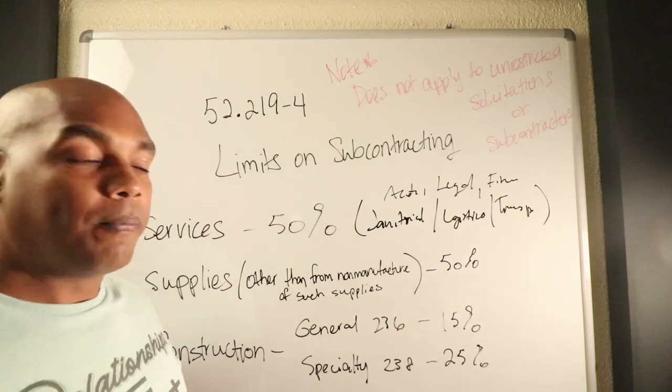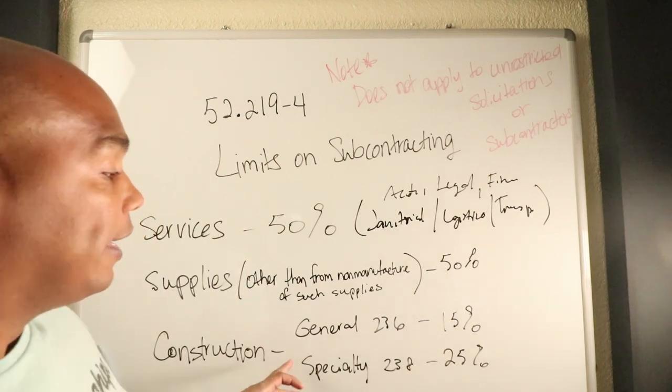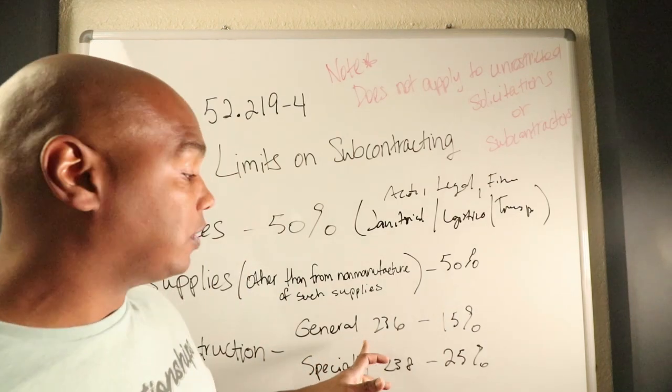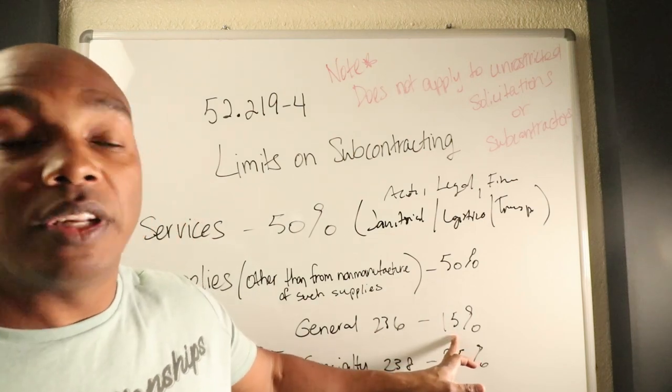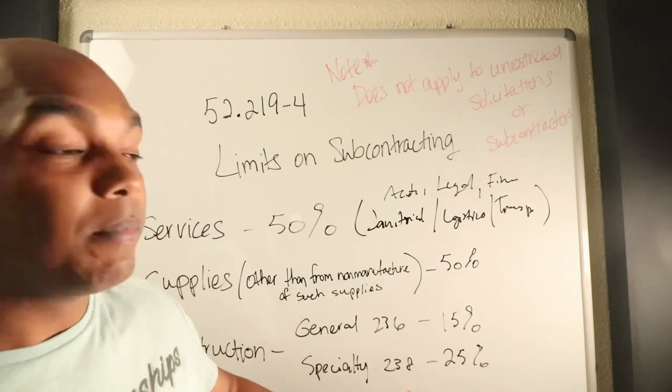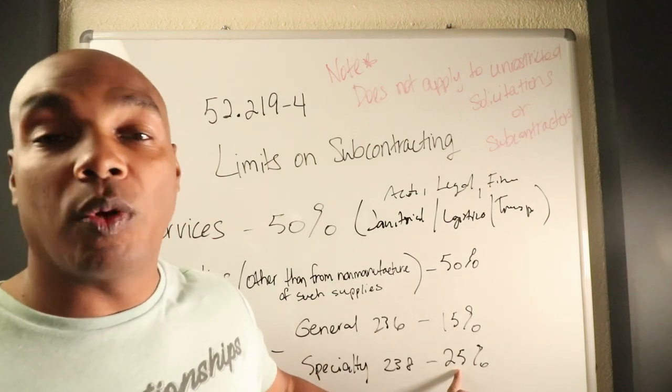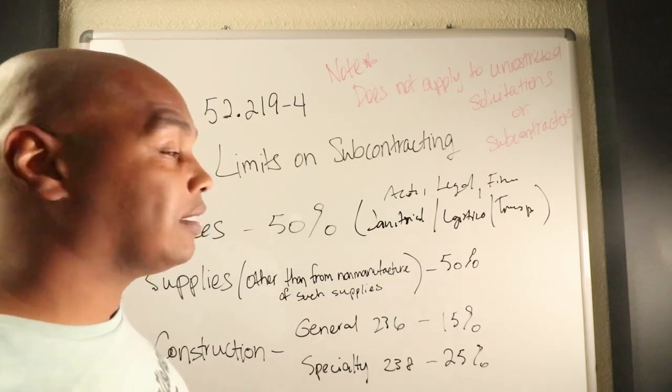Construction is a little bit trickier. There's essentially two criteria. If it's general construction which falls under the prefix of 236, you've got to self-perform 15% of the work. If it's specialty construction which falls under the prefix of 238, then 25% of the work is what you have to perform.